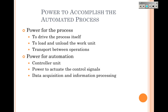Power to accomplish the automated process includes power to drive the process, to load and unload, and to transport between operations — that would be in a fully automated process. Power for the automation itself covers running the controller unit, actuating the control signals (which are often just a few volts), and supporting data acquisition such as sensors and information processing.